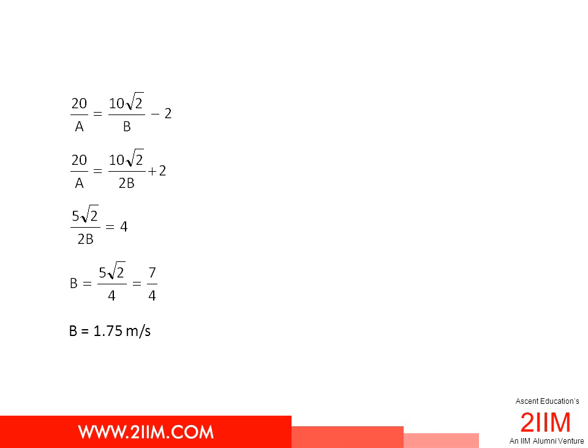In the second scenario, when B doubles its speed, then A reaches later or B reaches 2 seconds sooner than A, which means the equation would be 20 by A equals 10 root 2 by 2B plus 2.